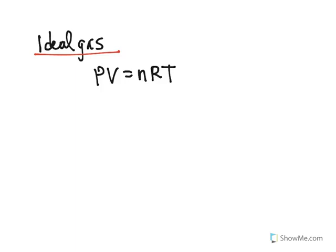When we have a gas, and we're stating that we have an ideal gas, this equation applies: PV equals nRT.